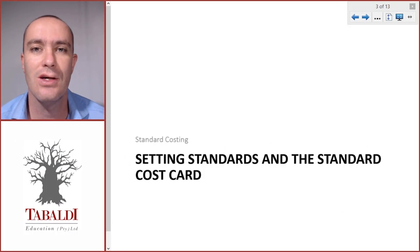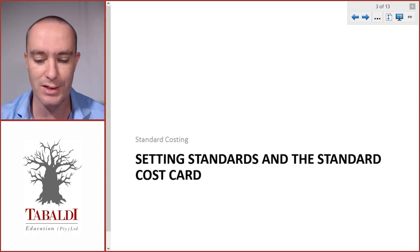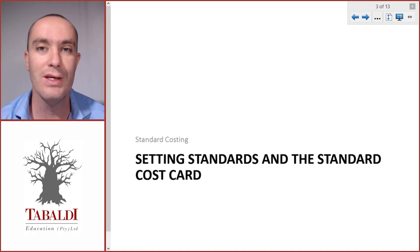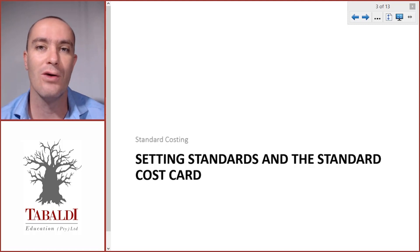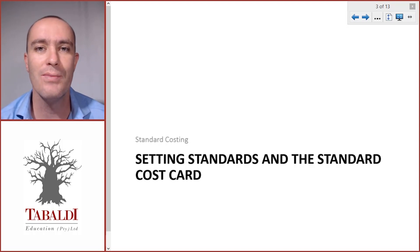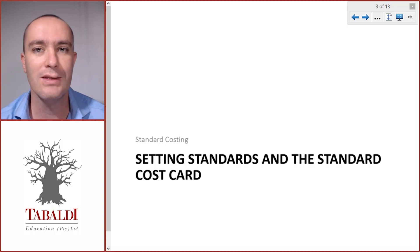Standard costs are like target costs — how much should it cost us to make a product. So always think of it as the amount it should cost. How do we set these standards? If the company has been operating for a number of years, one way is to look at past historical information. If operations were running efficiently and smoothly, we can take past information and use that to set our standards, making small adjustments for things we want to improve, aiming for a slightly lower cost or better quality.